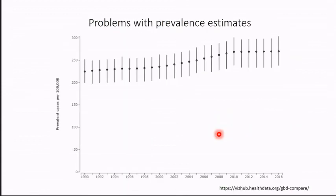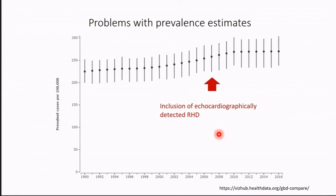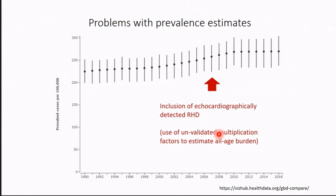Another problem with prevalence estimates is that lately there have been lots of studies doing population screening for very trivial or mild disease, and there's an uptick in prevalence figures when all these echocardiographic prevalence studies were being done — all of which gets pulled into the GBD estimates. Most data for all-age population prevalence comes from screening just school children, and the way you derive population estimates is by using an arbitrary multiplier derived from very old data, which is really not a good way of doing things.